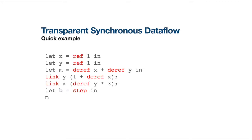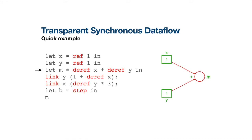Here is a small example written in our language. The keywords in red are the new operators we introduced. In the first line, we create a cell X initialized by the value 1. Then we create another cell Y. After that, we create an immediate dependency M, which depends on both X and Y. The derivative operator creates an edge from a cell. In the next line, we have the link operator, which modifies the dependency of a cell. Here we modify the dependency of Y to 1 plus X.